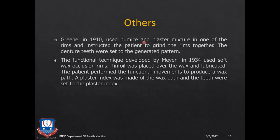Others like Green advocated the use of pumice and plaster in one of the rims, instructing the patient to grind the rims together — somewhat similar to the Patterson method. Mayer advocated the use of soft wax occlusal rims covered with tin foil and replicated with oil; the patient performed functional movements like swallowing, grinding, excursive, and protrusive movements. This shaped the wax of the upper and lower rims, which were then packed with plaster to create an index, and tooth setting was done based on the contours of these indices.